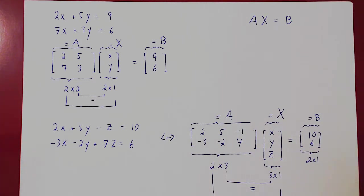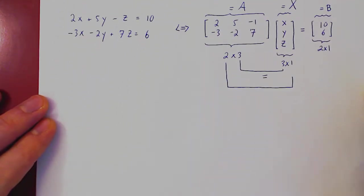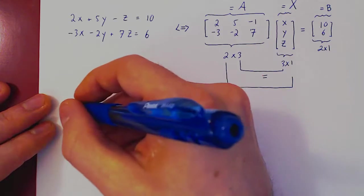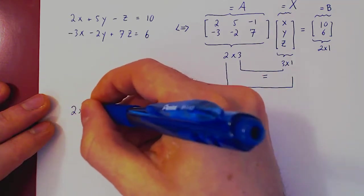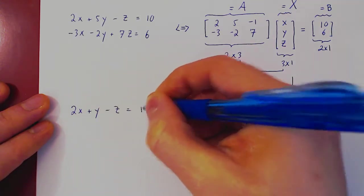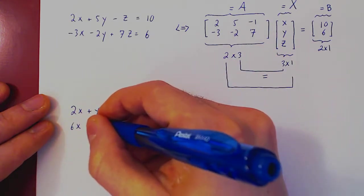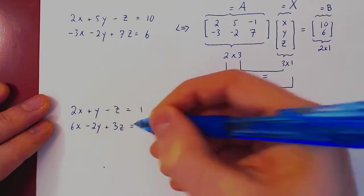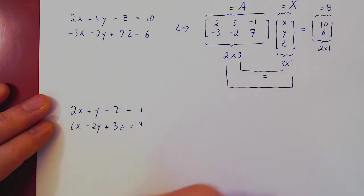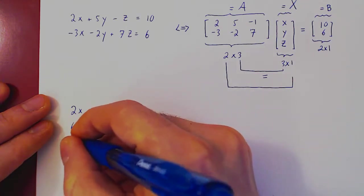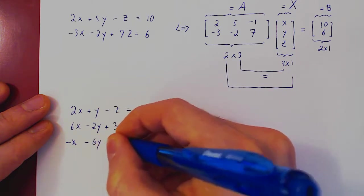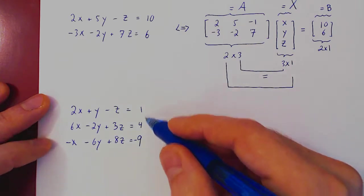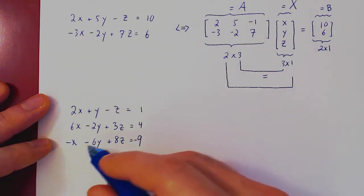So now let's do one last example very quickly, and then we will not check, we'll just do it. Suppose we have three equations, three variables. Okay, so we have a linear system now, three equations, and three variables.